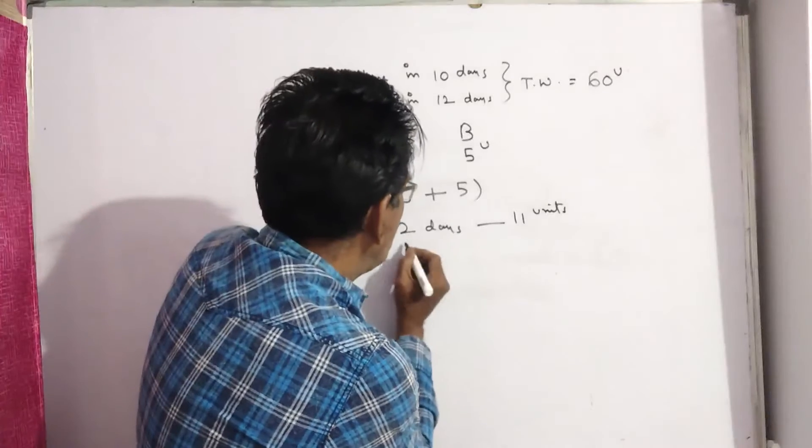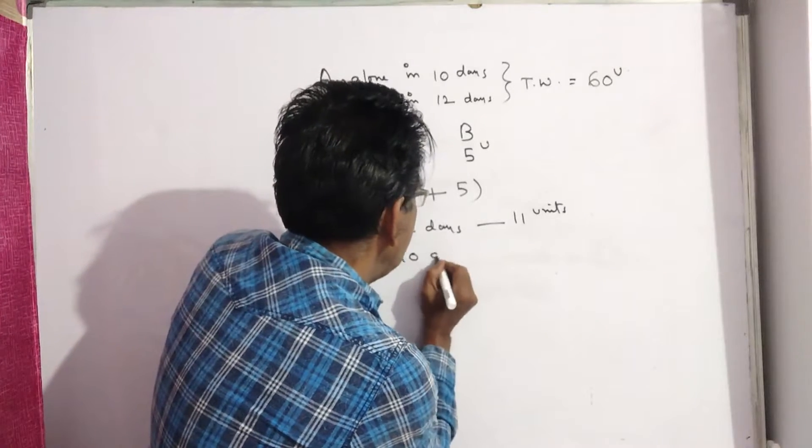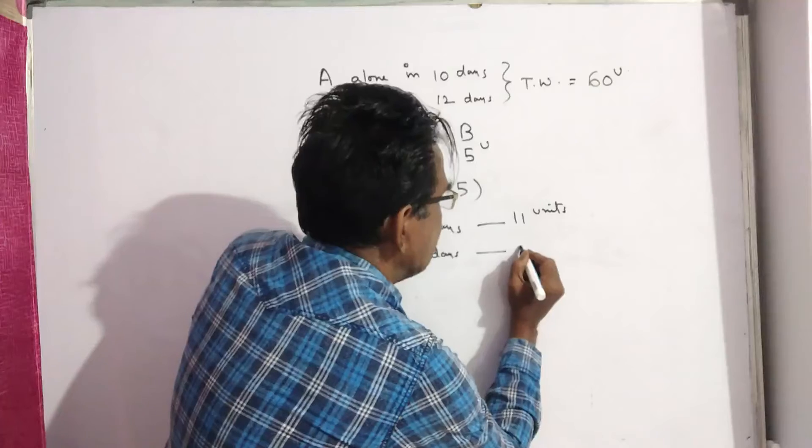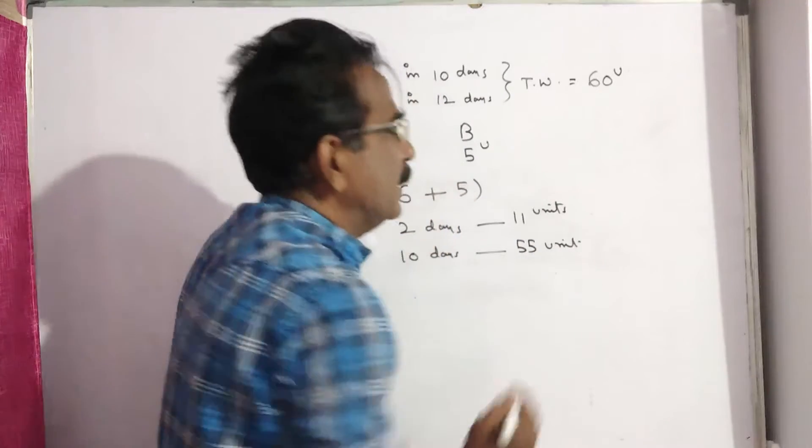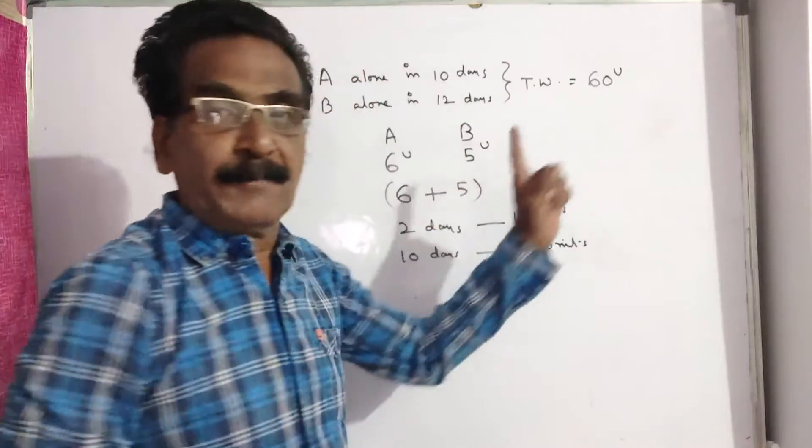In 5 two-day cycles, that is 10 days, 5 times 11, that is 55 units of work will be completed.